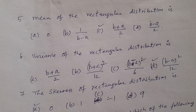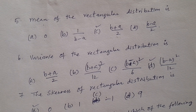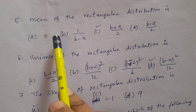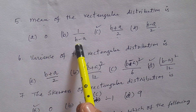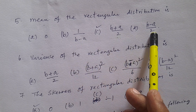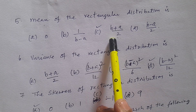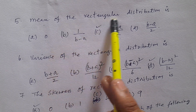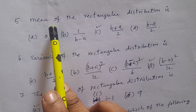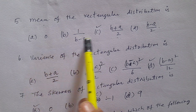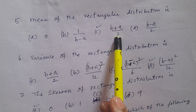Question number 5: The mean of the rectangular distribution — options: A. 0, B. 1/(b-a), C. (b+a)/2, D. (b-a)/2. Answer is C: (b+a)/2. The mean of the rectangular distribution is (b+a)/2.